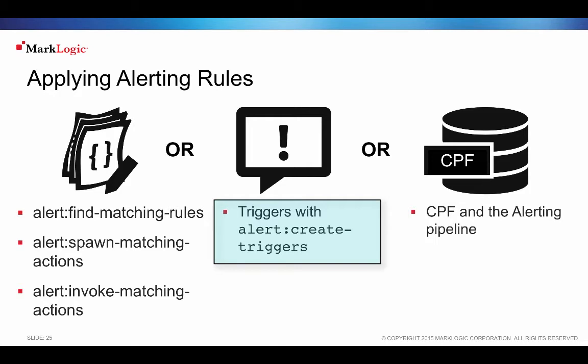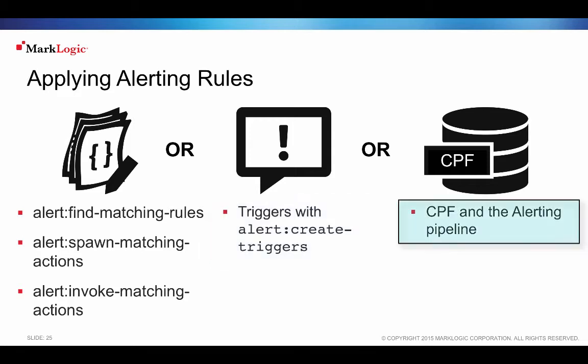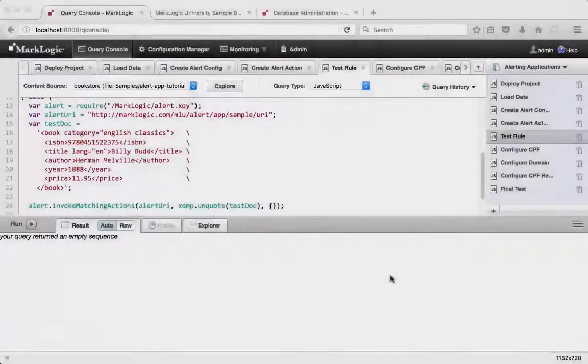Triggers can be created by the alert API to respond to database commit events for documents of interest. The trigger data contains the alert config URI and thus can find rules matching the document causing the commit event. Content processing framework can find matching rules for documents being processed by CPF, and if any rules are found, the actions are taken.